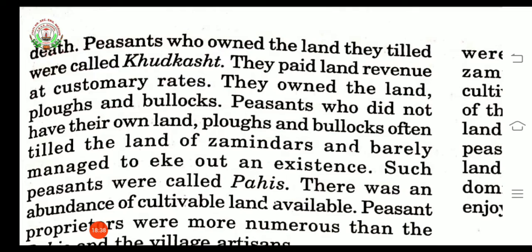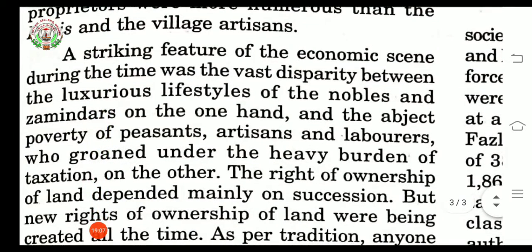There was an abundance of cultivable land available during this period. Abundance means a very large quantity. Peasant proprietors — meaning owners among the peasants — were more in number, while the pahis and the village artisans were less. There was a vast difference between the luxurious lifestyle of the nobles and the zamindars, and the terrible poverty of peasants, artisans and laborers who were under the heavy burden of taxation.